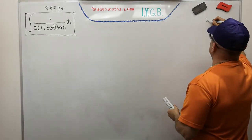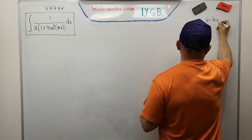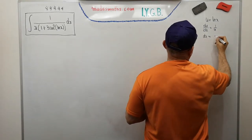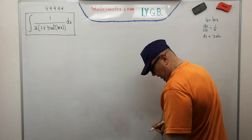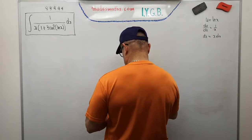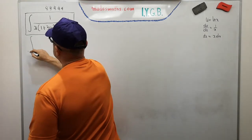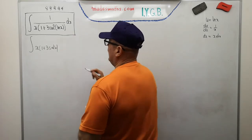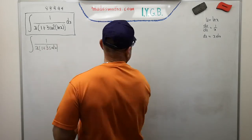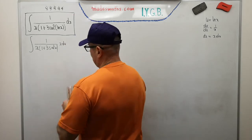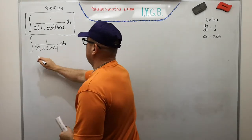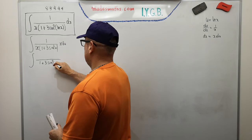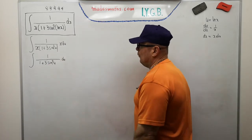Obvious substitution for something like this is to start with u is equal to the log of x. Differentiate it immediately. Du by dx is 1 over x and make dx the subject. So dx is going to be equal to x du. Let's transform this particular integral. This will now become the integral of 1 over 1 plus 3 sine squared of u now, times x du which conveniently will get rid of my x's here and here. So it's actually not that bad. So massively simplified.